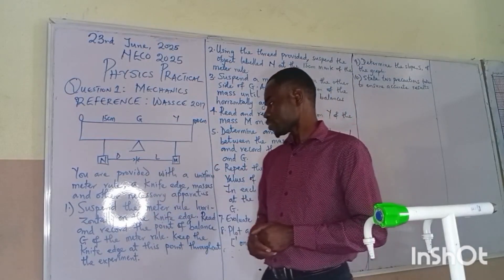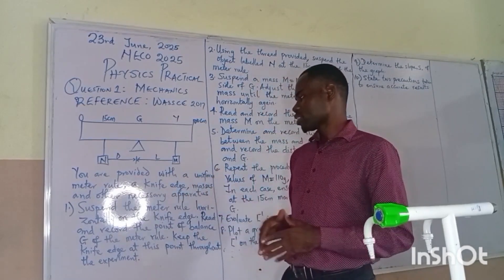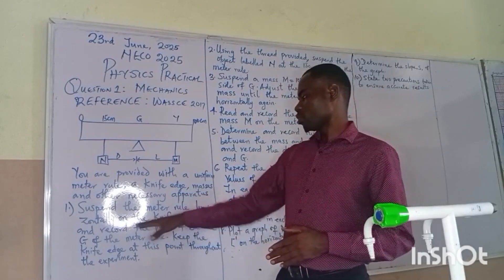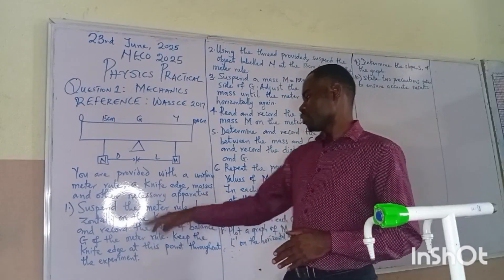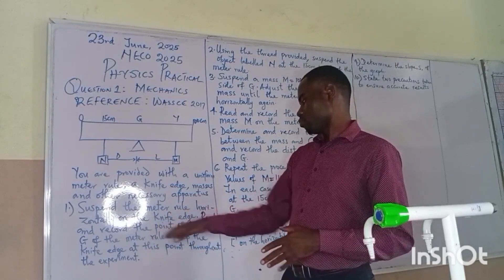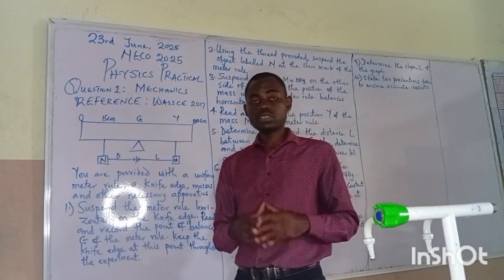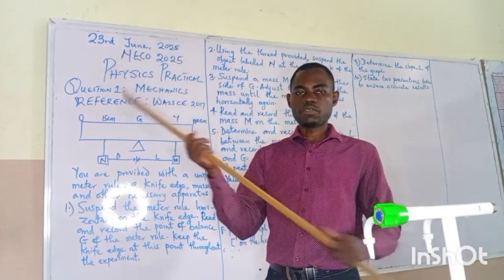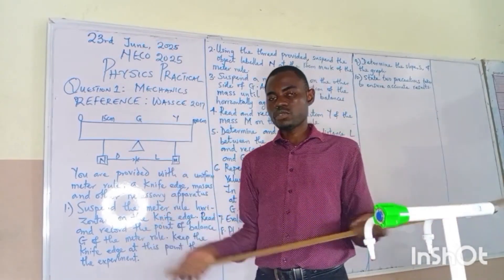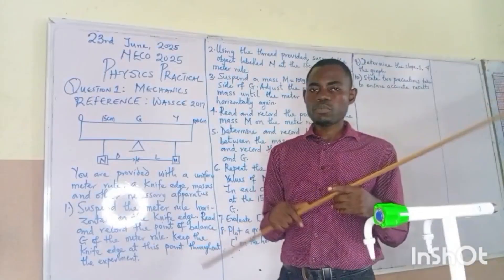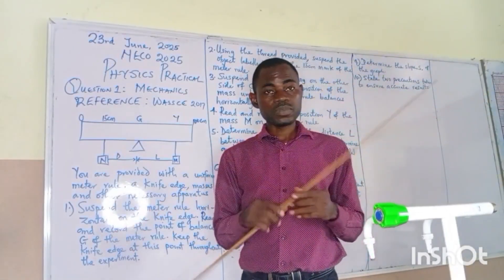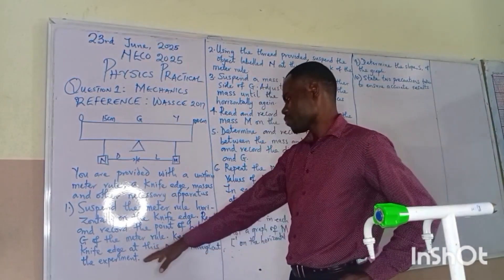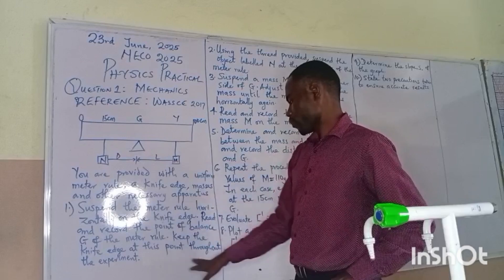Then we are provided with a uniform meter rule, a knife edge, masses and other necessary apparatus. So suspend the meter rule horizontally on the knife edge. Read and record the point of balance G of the meter rule. We all know that any time we are doing equilibrium, the first thing we must do is to know the center of gravity of a meter rule. And I have told us several times in our videos that don't always agree that all meter rule center of gravity is 50. It depends on the material. So keep the knife edge at this point throughout the experiment.